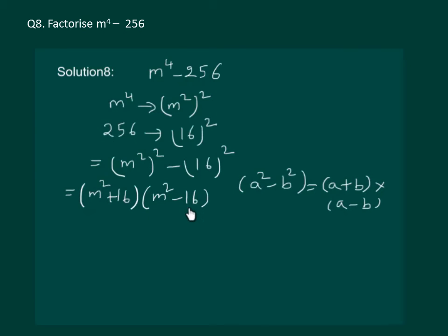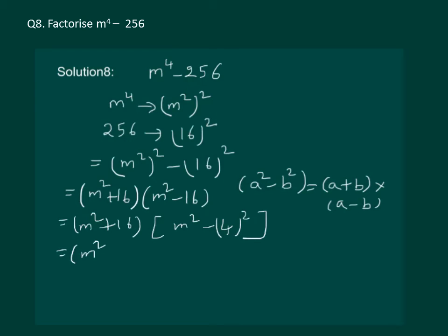m squared minus 16 can be written as m squared minus 4 whole square, which factors as m plus 4 into m minus 4, again using the same identity. So we get m squared plus 16 into m plus 4 into m minus 4. Hence we have reached a position where none of the terms can be simplified further — this is the required factorization of m to the power 4 minus 256.